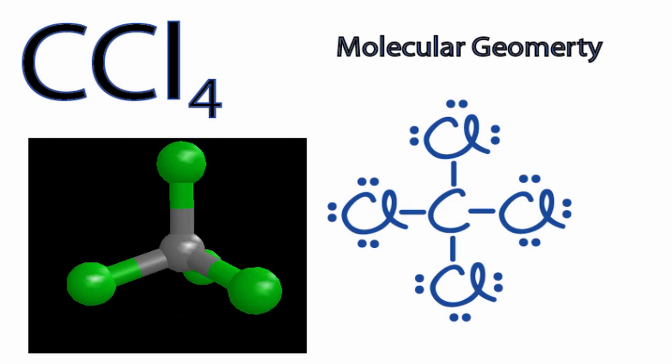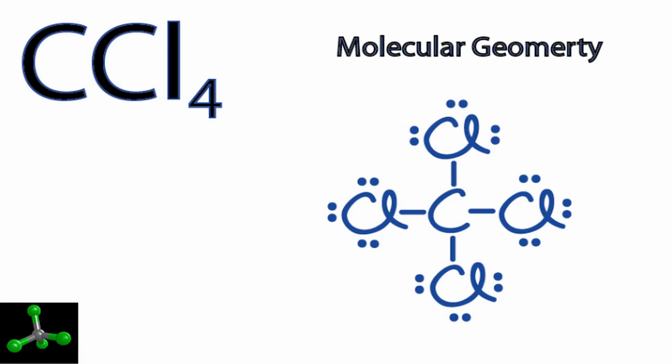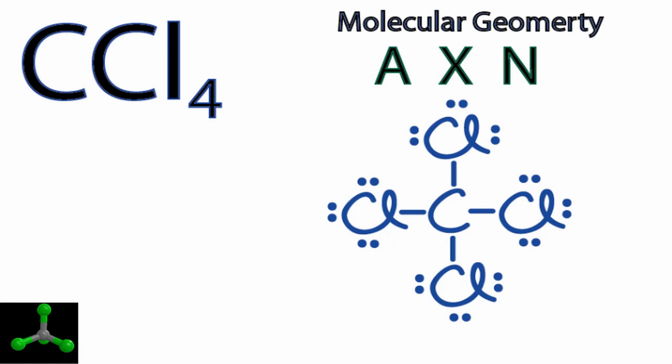We could also use the AXN notation to figure out the molecular geometry for CCl4. A, that's the central carbon. X, that's the number of atoms bonded to that central carbon. We have four chlorines, so we'll put a four right there.